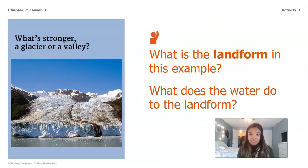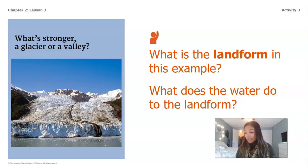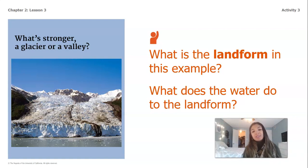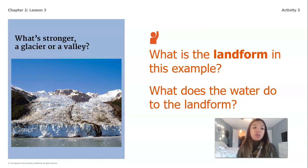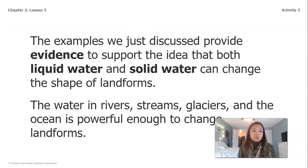In this picture, the example of the landform is the valley. Glaciers move very slowly — even though you can't see a glacier moving like you'd see a river moving, it is moving over time. As it moves, it's pulling solid rock down with it. Over time, the glacier will make the valley wider or make it into a bigger U shape. These examples provide evidence to support the idea that both liquid water and solid water can change the shape of landforms.